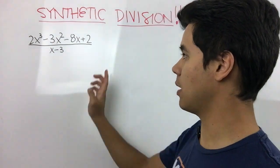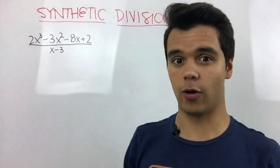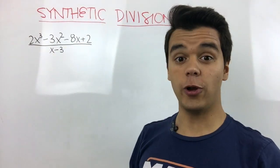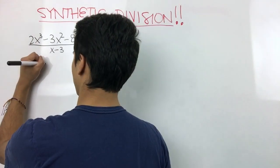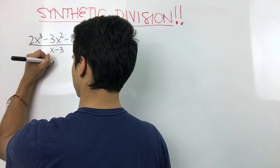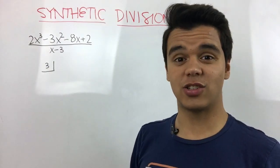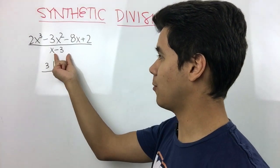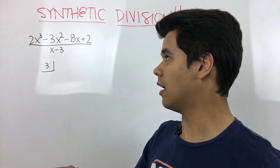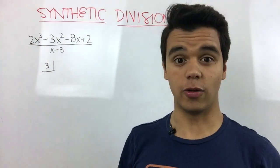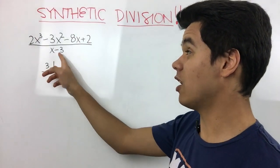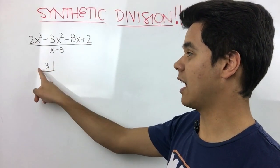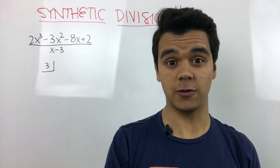First we have to pick the number that would make our denominator equal to zero. So if x is equal to 3, 3 minus 3 would be equal to zero. Therefore we're going to write 3 here. That's just fancy terms of saying take this number and take the opposite number. So the opposite of negative 3 would be 3. If this was positive 3, it would be negative 3 in here because it would be the opposite number.